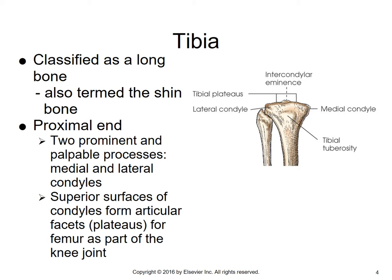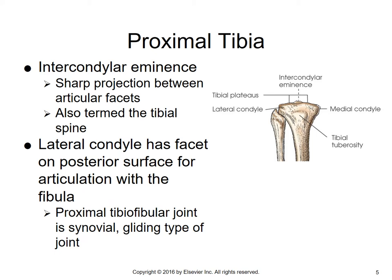This is where the femur is going to rest on top of the tibia. You have these two sharp projections that come up from the tibial plateau — this is called your intercondylar eminence. Remember, inter means between, so between the condyles. Eminence is something that's raised up, so the intercondylar eminence consists of sharp projections between the articular facets. Another term you sometimes see for intercondylar eminence is tibial spine, though it's not used as much.